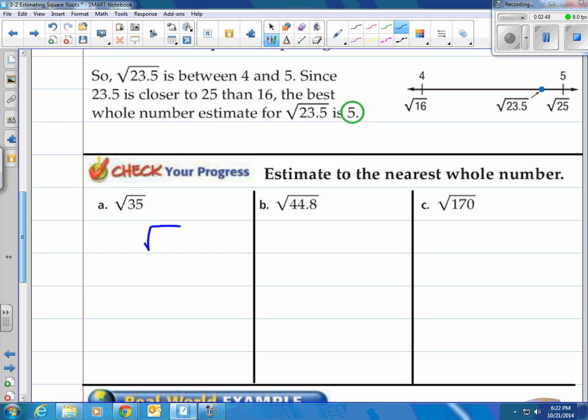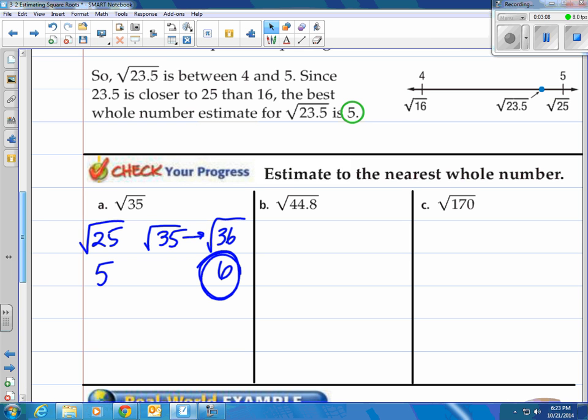All right, square root of 35. Perfect square number above 35 is 36 and the one below is 25. Square root of 25, square root of 36. This is 5, this is 6. And what is 35 closest to? This one over here at 36. So we would say 6 would be a good estimate of the square root of 35.